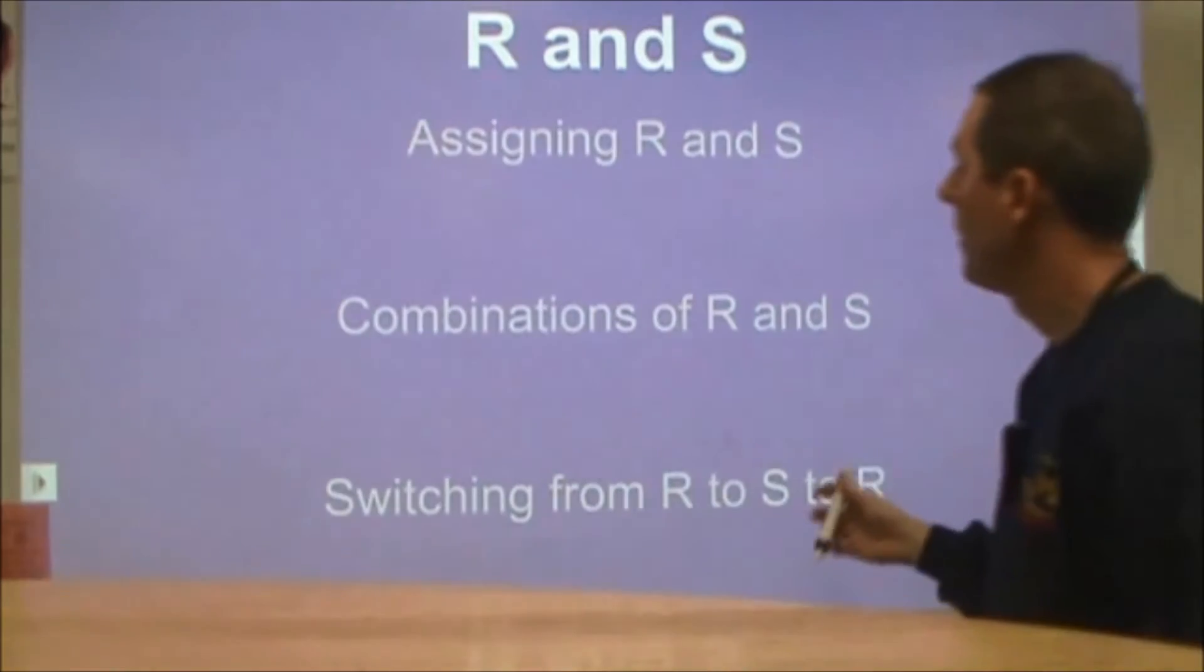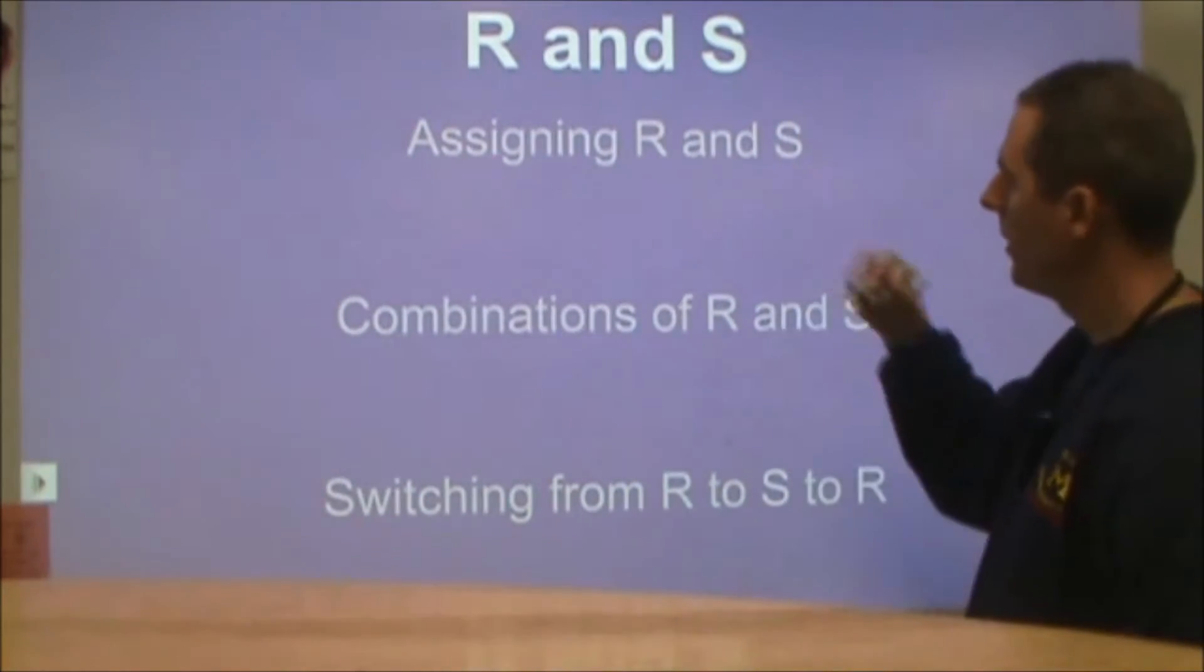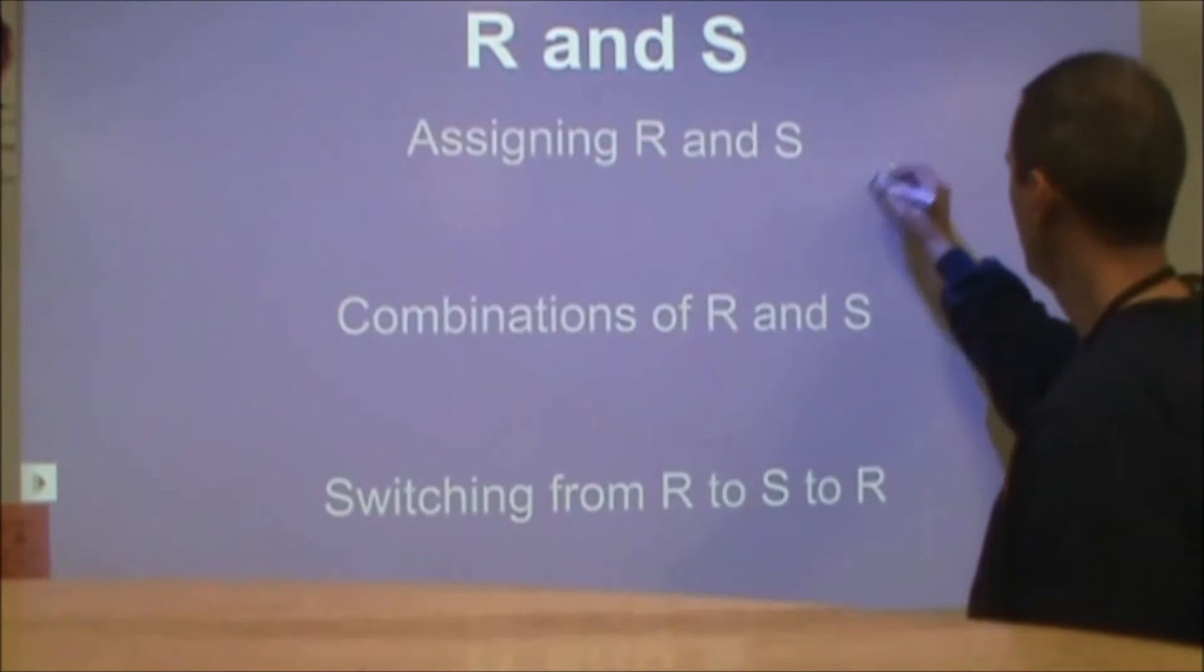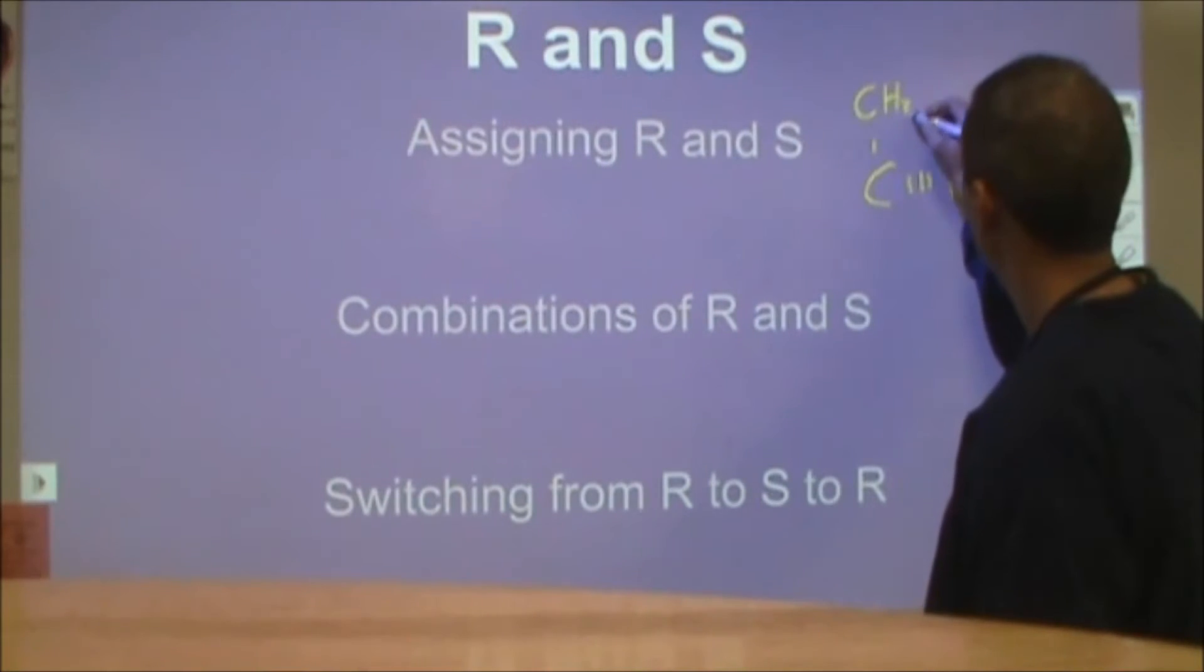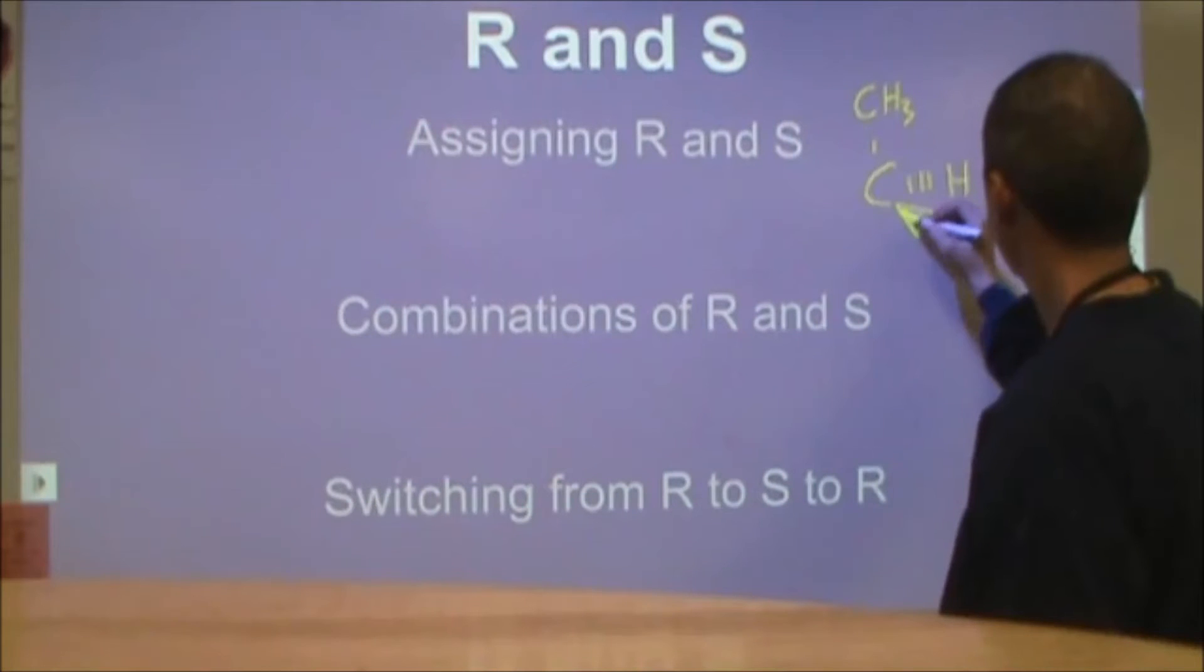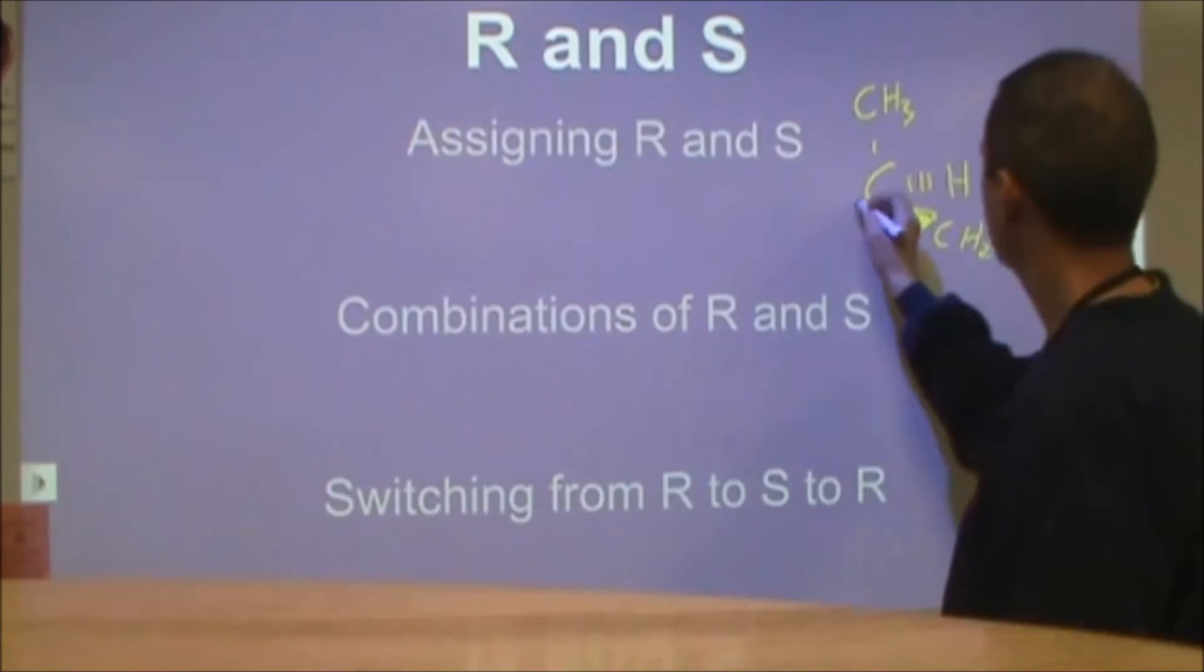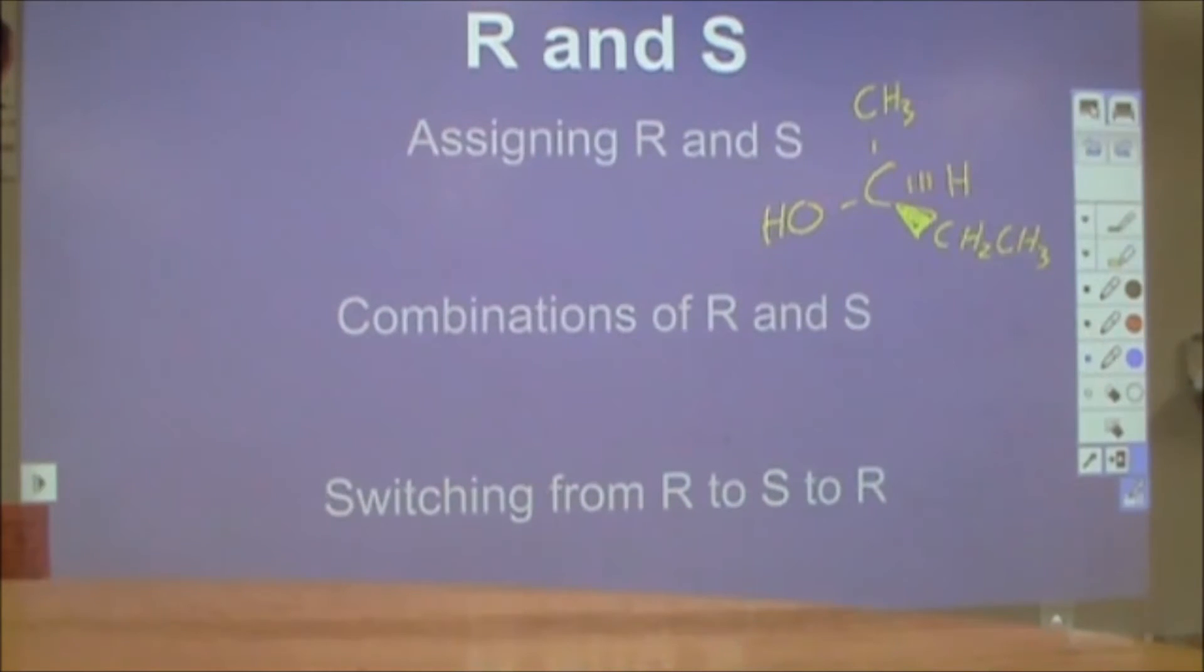First of all, for enantiomers and diastereomers, you want to know how to assign an R and an S configuration to them. So if I have a carbon with four different things attached, let's look at butan-2-ol.